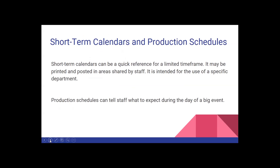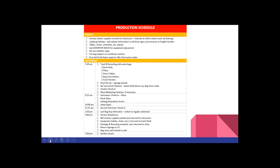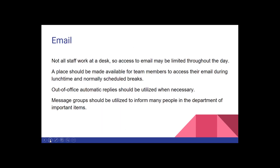Short-term calendars cover just one particular day. A production schedule tells staff what's going to be going on during a particular event that may be taking up most of the garden space or day. For example, we have an event called Bug Day — Friday is for setup with a listing of things to be done, and Saturday is much more detailed, showing what's happening at any one particular time. It's helpful for staff to check things off, and everyone else can know what to expect. Email is a good way to share information, particularly if staff can receive and check it at least a couple of times a day. For staff who work out in the garden and aren't at a computer, we make time for them to go to a station and check their email.